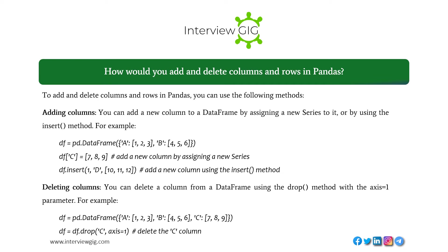To add and delete columns and rows in pandas, you can use the following methods. Adding columns: you can add a new column to a DataFrame by assigning a new Series to it, or by using the insert() method. For example: df = pd.DataFrame({'a': [1,2,3], 'b': [4,5,6]}), df['c'] = [7,8,9] to add a new column by assignment, or df.insert(1, 'd', [10,11,12]) to add a column using the insert() method.